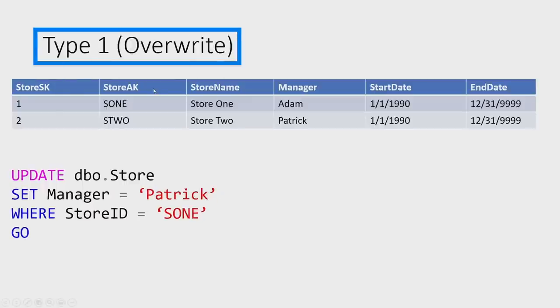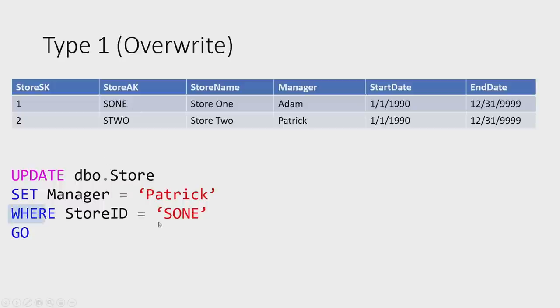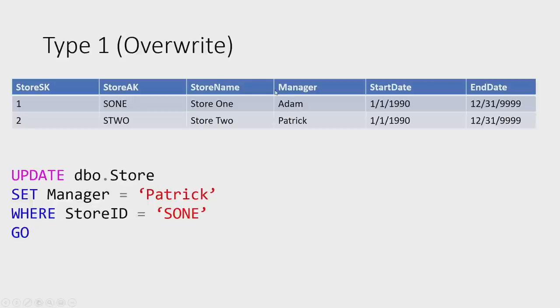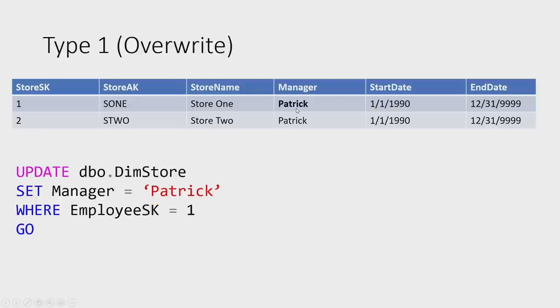For type one, if I run the same update in my source system, all it's going to do is find the row for that particular store and overwrite the value. So if the old manager was Adam, we're going to change it to whatever the source has — it's going to match the source. So type zero: not changing anything. Type one: just going to overwrite whatever's there.